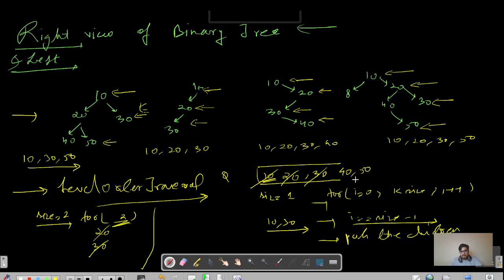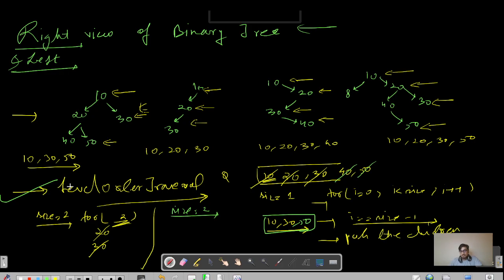In the third iteration, the queue has two elements: 40 and 50. Node 40 is processed — it has no children, so we move on. Node 50 is removed from the queue and also has no children, but since it's the last node of this level (i equals size minus 1), we add it to our answer. The final answer is 10, 30, and 50. For the left view, the only change is to print when i equals 0 — the first node of each level.